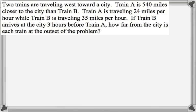Train A is traveling 24 miles per hour while train B is traveling 35 miles per hour. If train B arrives at the city three hours before train A, how far from the city is each train at the outset of the problem? So this sounds impossible. It sounds like there's a lot going on.